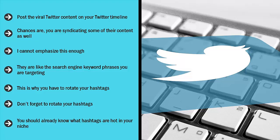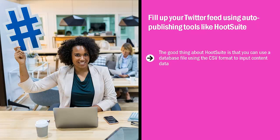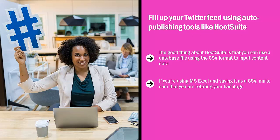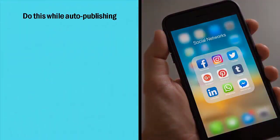Fill up your Twitter feed using auto-publishing tools like Hootsuite. The good thing about Hootsuite is that you can use a database file in CSV format to input content data — you don't have to manually enter each piece of content. Make sure you are rotating your hashtags and resharing or retweeting certain content with rotated hashtags. Even if you are not retweeting curated content, you should still rotate your hashtags. The key is to constantly experiment to see which hashtag accounts for the surge of traffic your conversion page has gotten — do this while auto-publishing.